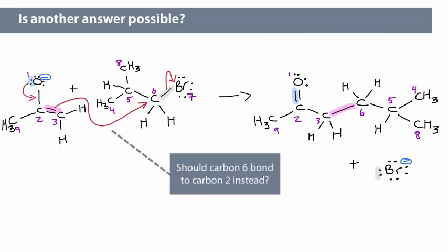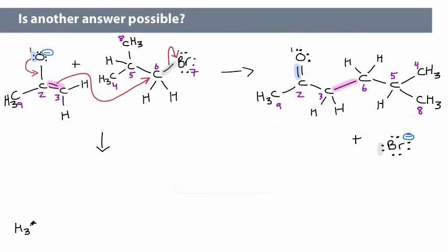When there is more than one possible answer, and this will happen fairly frequently, draw out all the possibilities and analyze them. Let's draw the product that would form if C2 and C6 bonded.